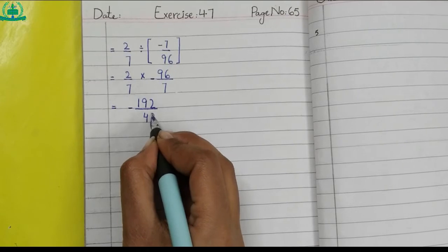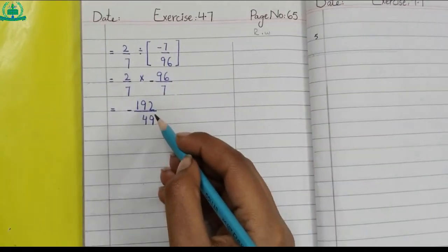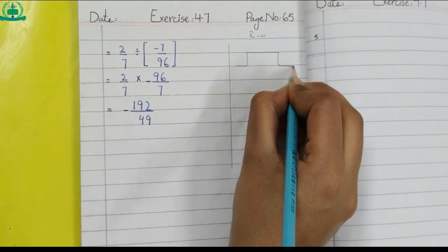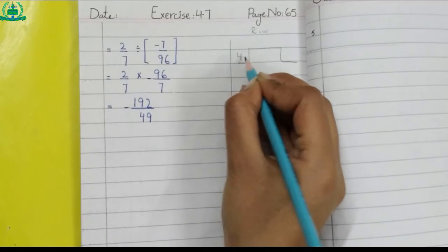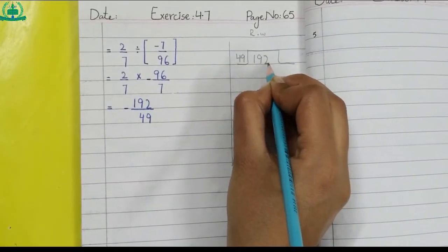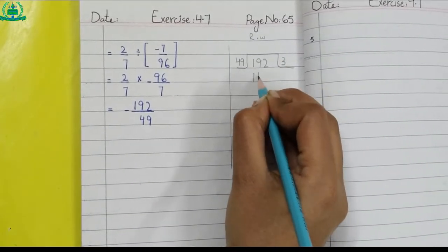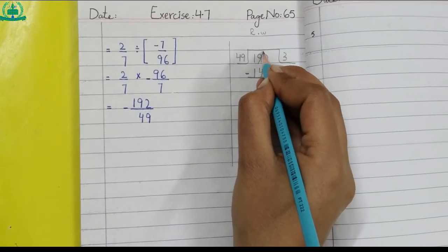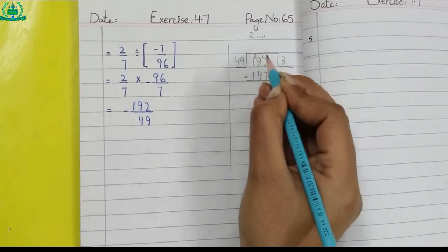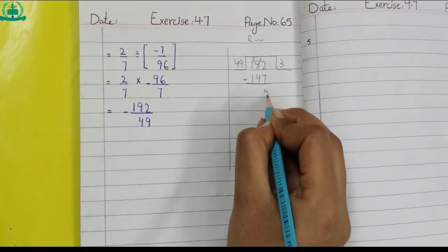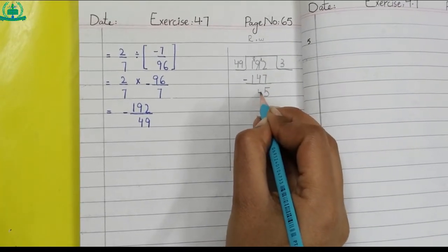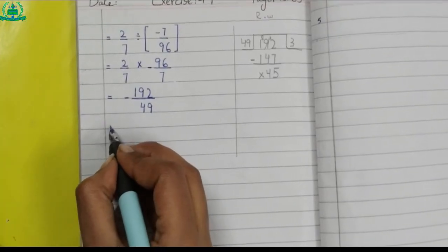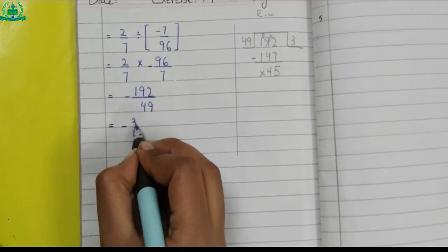Multiply by 96 makes 192, so we write 192 upon 7. Multiply by 7 makes 49, so we write 49. 192 divided by 49 — rough work: to divide, we put denominator in divisor place and numerator in dividend place. 49 three is 147. Borrow one from nine makes 12, twelve minus seven five. We write five, eight minus four four, one minus one. There is no remainder. We write the answer in mixed number form: minus 3 whole 45 upon 49.